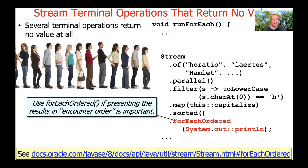ForEachOrdered uses a lock under the hood to make sure that encounter order is preserved. The consequence is it runs a little slower, but you get a deterministic result where output order matches encounter order. That may or may not be necessary. An even better rule of thumb is to just stay away from using side effect-laden terminal operations with parallel streams altogether — that's usually the best way to go.